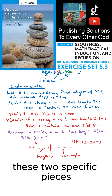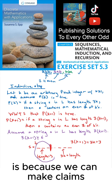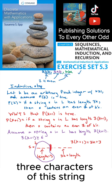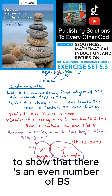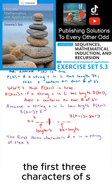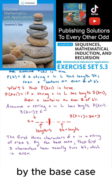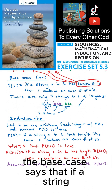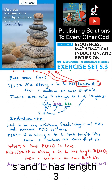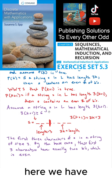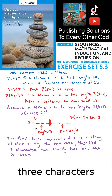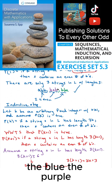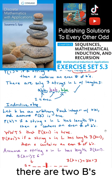The reason I'm separating this string into these two specific pieces is because we can make claims about the number of Bs in the first 3 characters using the base case, and we'll be able to use the inductive hypothesis to show there's an even number of Bs in the rest of the string. The first 3 characters of S is a string of size 3. By the base case, these first 3 characters have exactly 2 Bs, which is even. The base case says if a string S in L has length 3, then S contains an even number of Bs. Here we have a string of length 3 — the first 3 characters — which will be one of the three options: the blue, the purple, or the green. In all three of those cases there are 2 Bs, which is even.